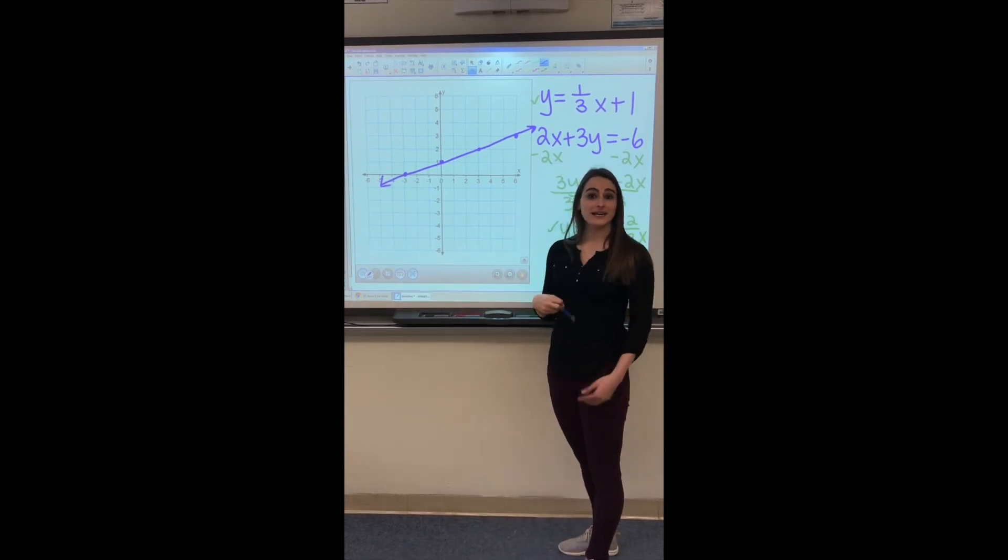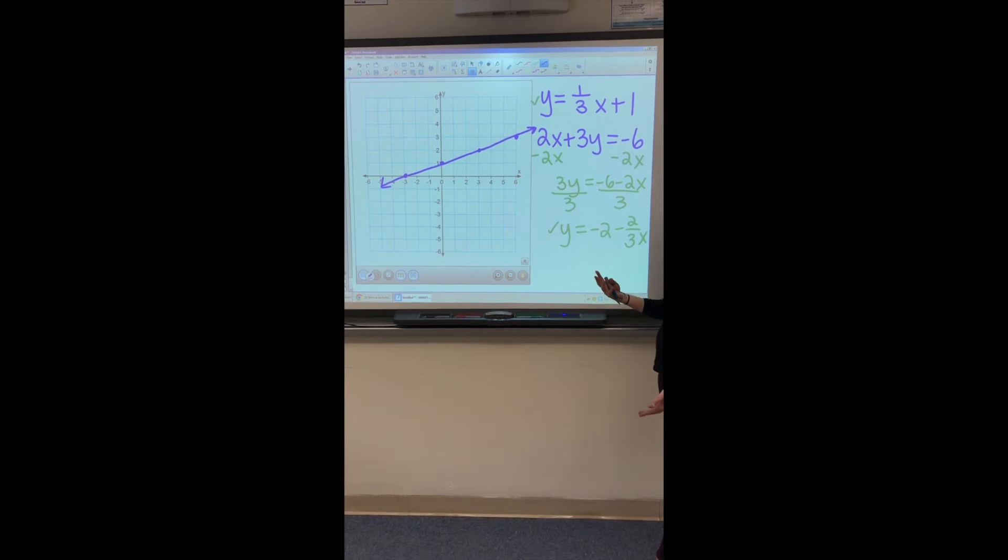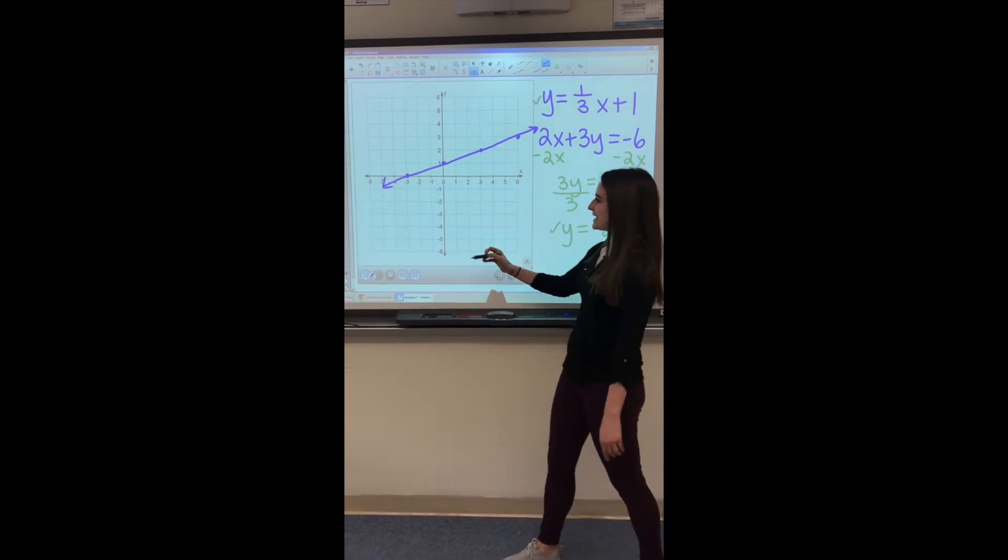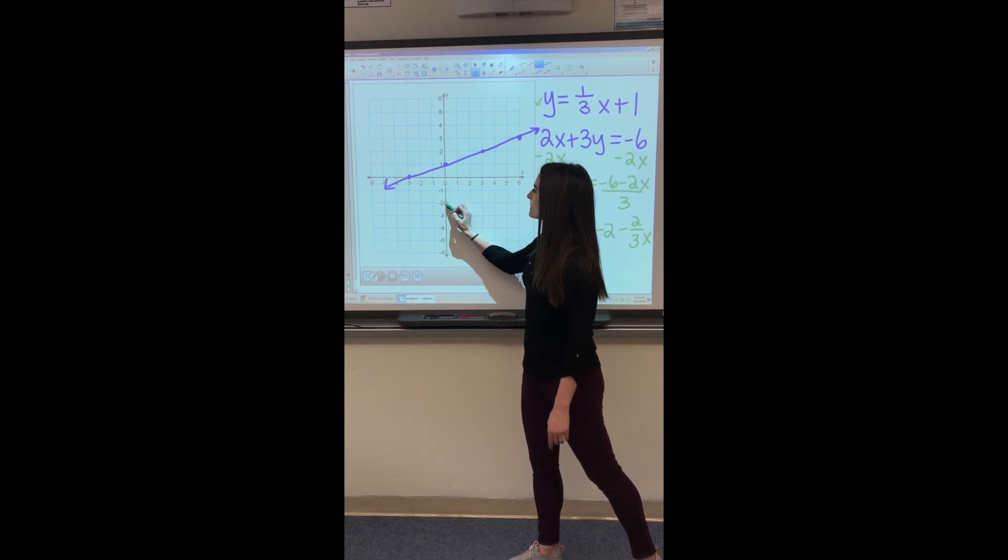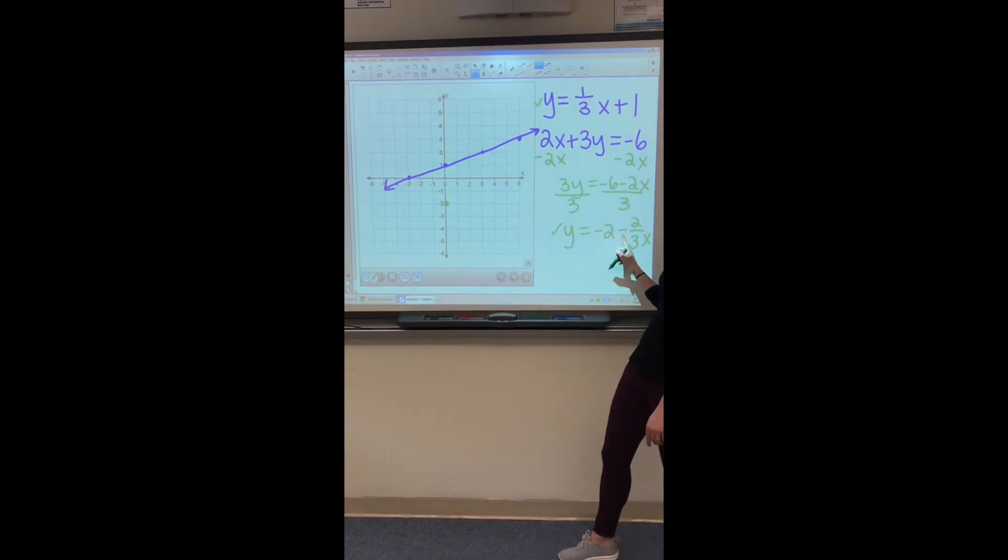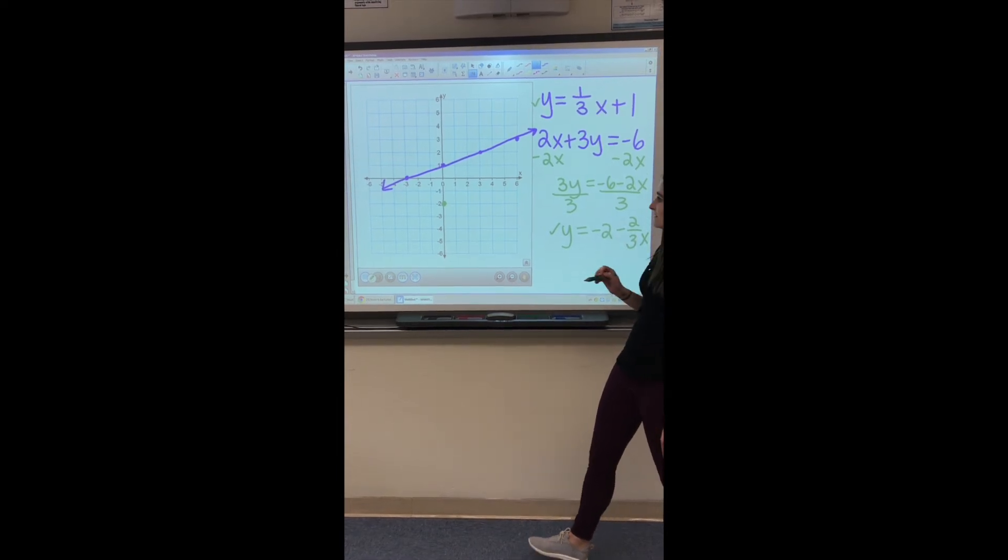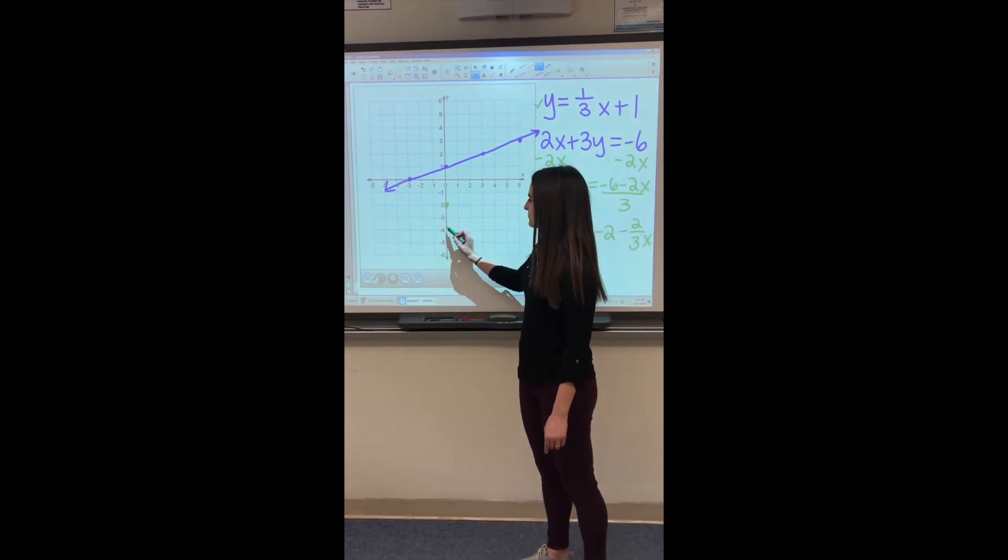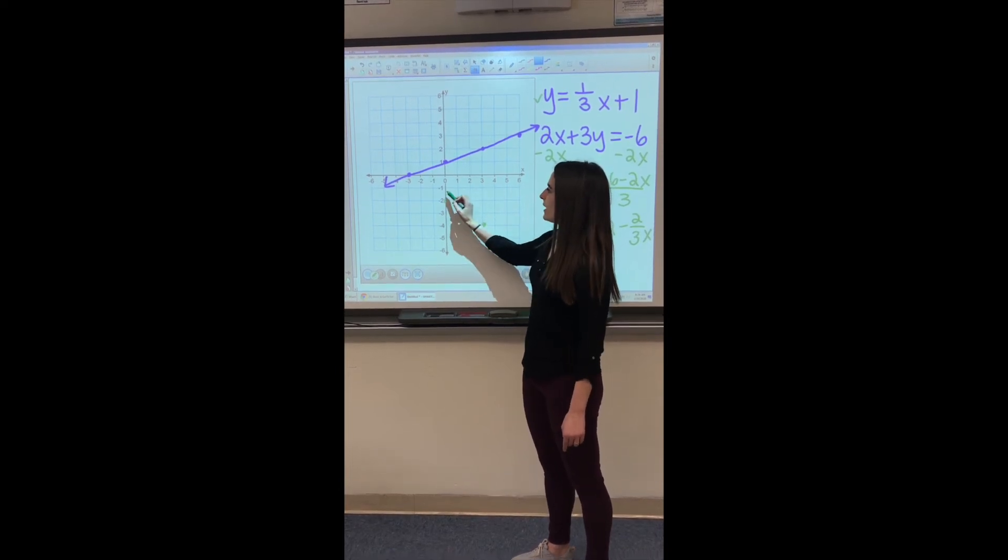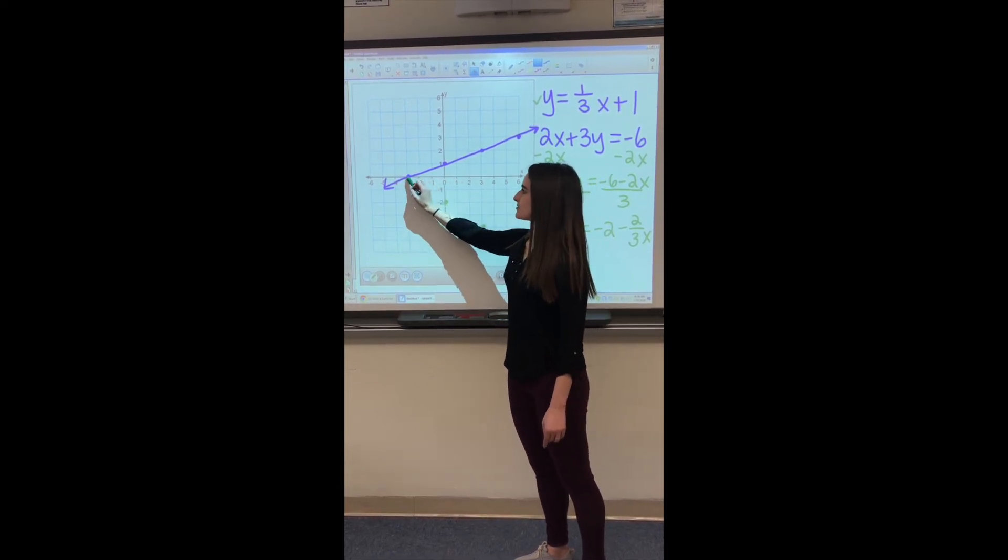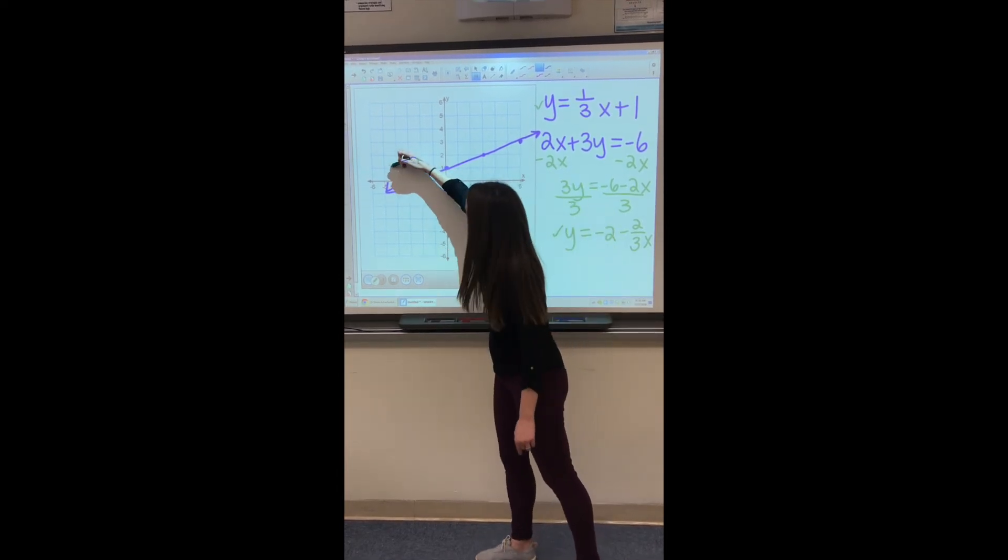And now that I did the work to get it into slope intercept form for the second equation, I'm going to look at this one and I'm going to graph it the same. So our y-intercept is at negative 2. Our slope is negative 2 thirds. Be careful of those signs, make sure you're paying attention to that. So we are going to go down 2 and to the right 3, or we can go up 2 and to the left 3, and we're going to see that we land on the same point. Draw our line.